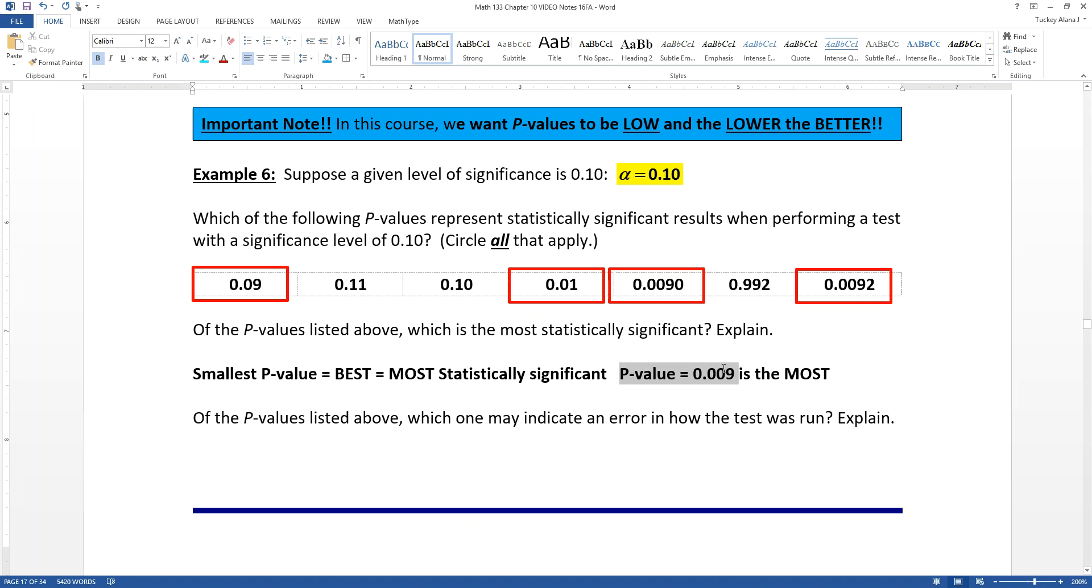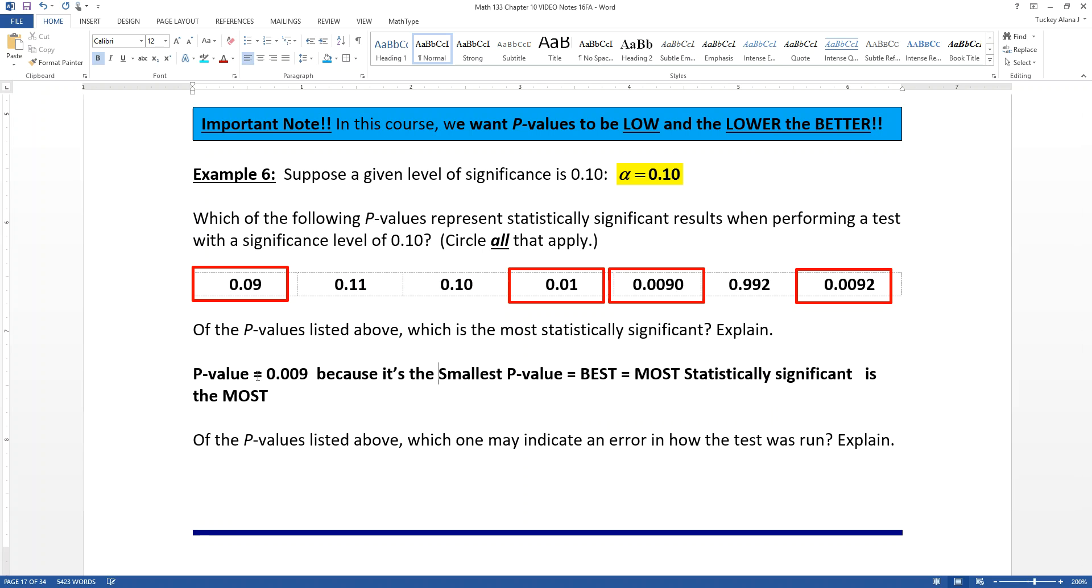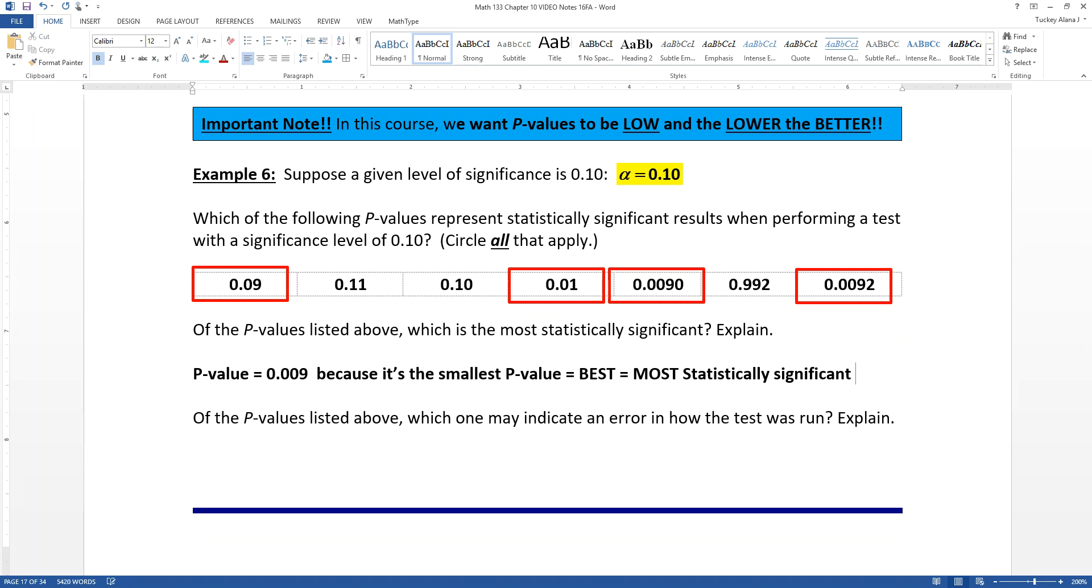Oh, here. Actually, I'll just put that up in the front. So the p-value of 0.009 because it's the smallest p-value, which means it's the best. It's the most significant will reject the most hypotheses with a p-value of 0.009.